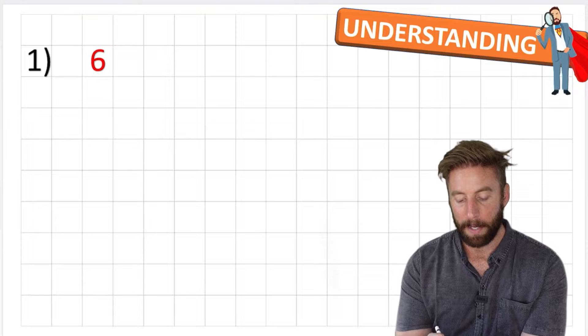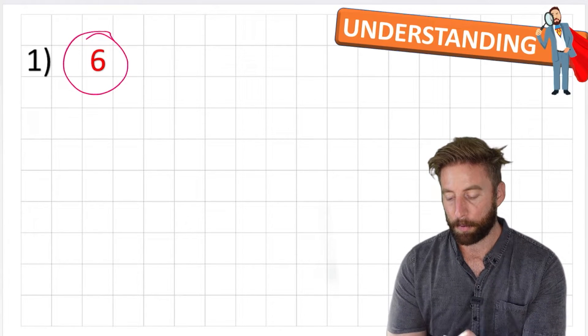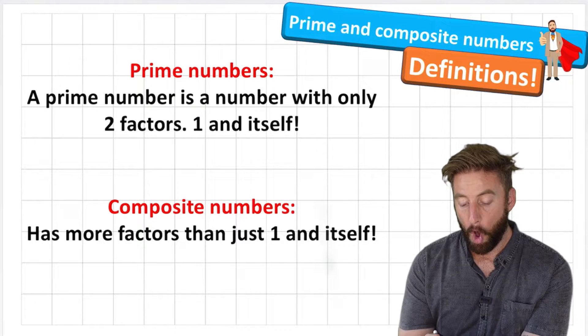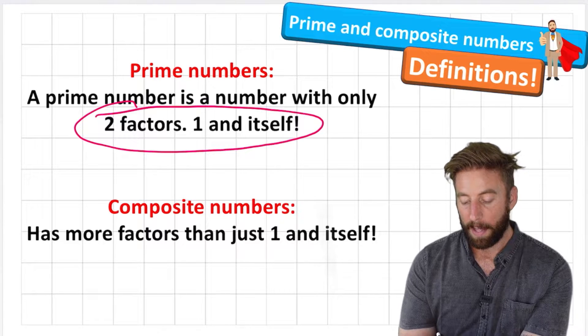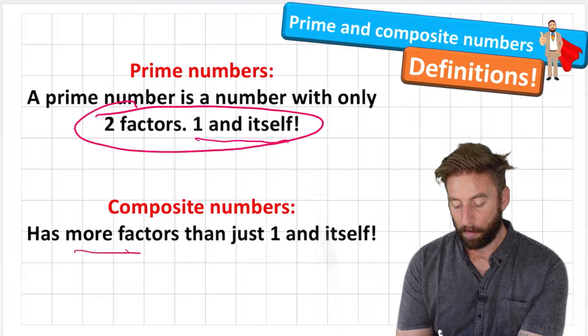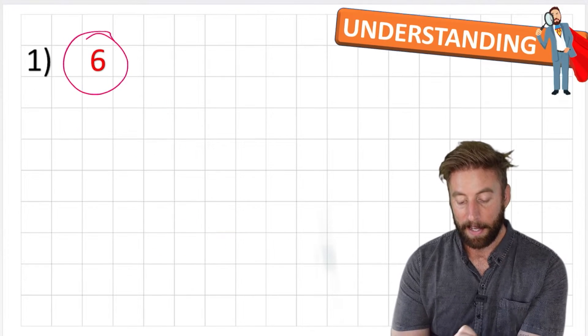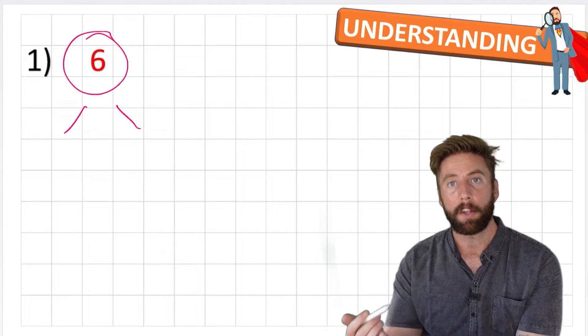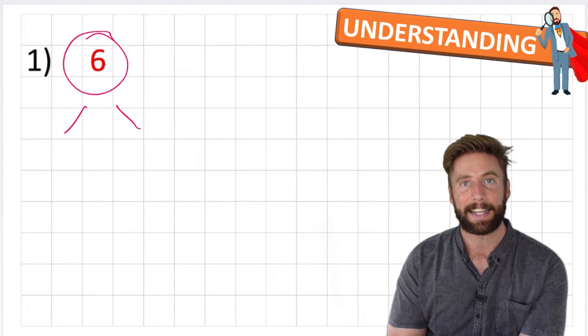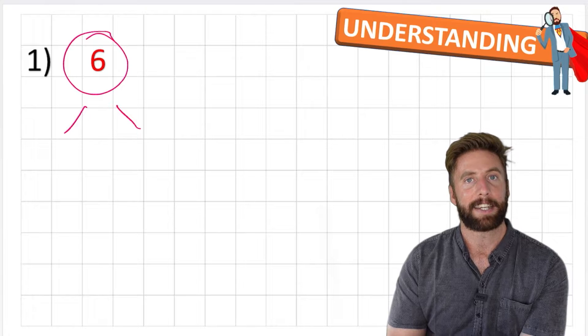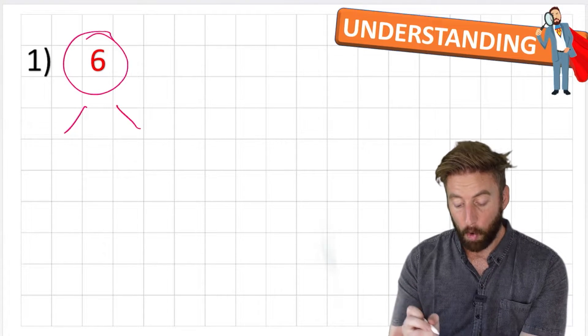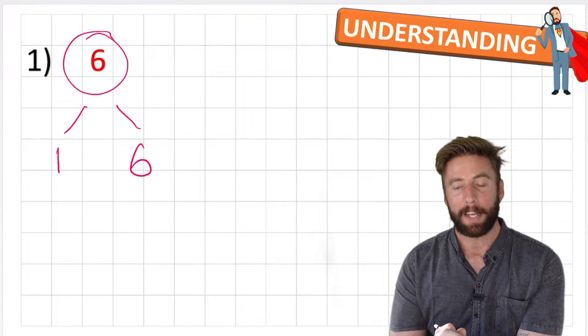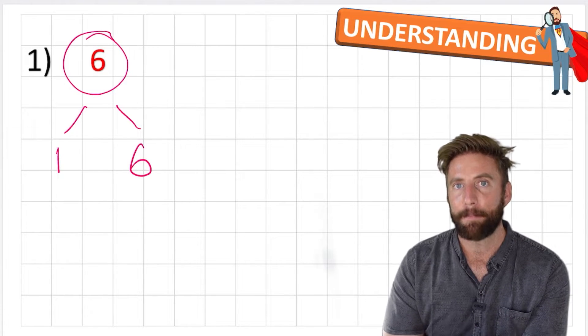So let's look at our first example, the number six, and let's discuss whether we think this is prime or composite. If we go back to our definitions, we know that a prime number is a number with only two factors, one and itself, whereas composite has more factors. So let's see what we get here. We need to start with what is a factor. A factor is an integer, which means whole number, times by another integer equals the number that we're looking at, which in this case is six.